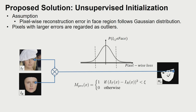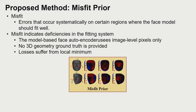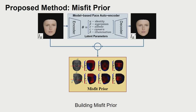To achieve unsupervised initialization, we assume that the pixel-wise errors in the face regions follow a Gaussian distribution, and pixels with larger errors are regarded as outliers. We also observe that an error occurs systematically on certain regions where the face model should fit well. We define such an error as misfit, and to counteract this, we use synthetic data to build a statistical prior showing at which regions this systematic error occurs on average.